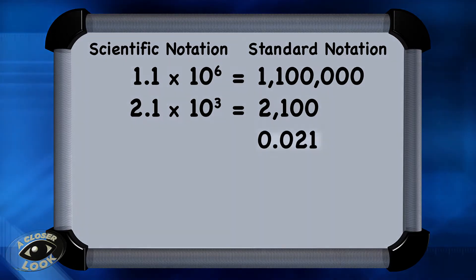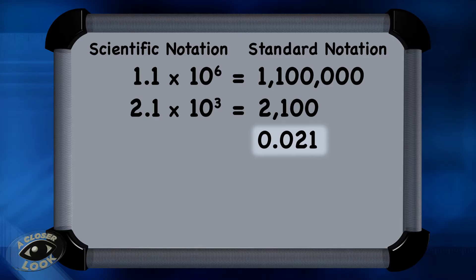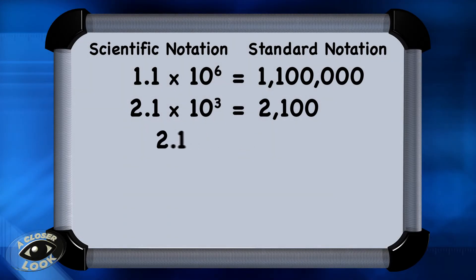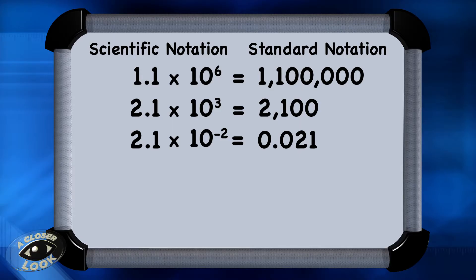Now let's look at 0.021. You're going to need to move the decimal to the right, because the rule is to move the decimal until you get to the spot where there's one non-zero integer to the left. After moving the decimal, you have 2.1. It's representing a number smaller than 1, so 2.1 times 10 — in this case, you put a negative exponent, so it will be negative 2. So you have 2.1 times 10 to the minus second power. And that is 0.021 in scientific notation.